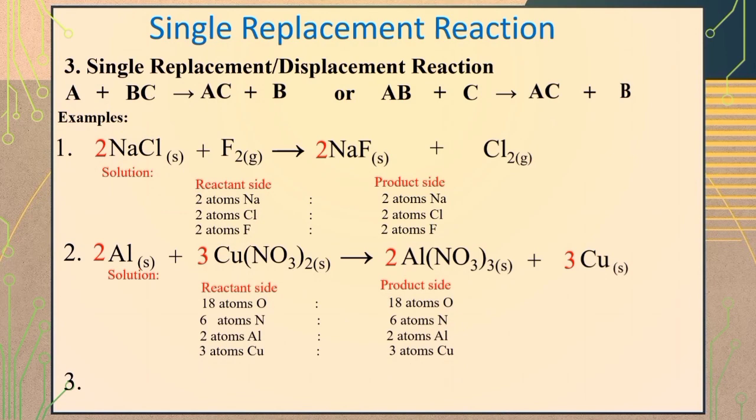For the reaction of calcium chloride and iodine, iodine cannot replace chlorine because chlorine is more reactive than iodine. Thus, no reaction will take place.